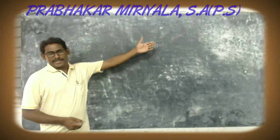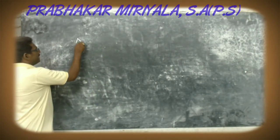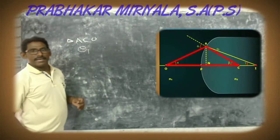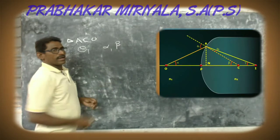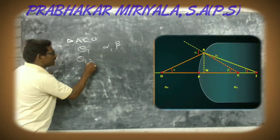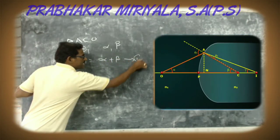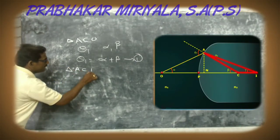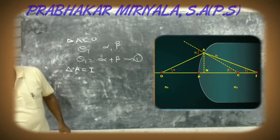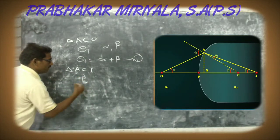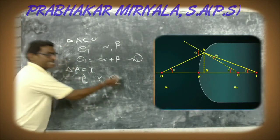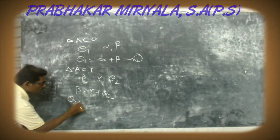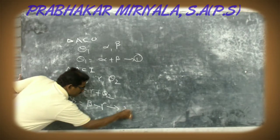From the diagram, in triangle ACO, theta 1 is the exterior angle and alpha and beta are the interior angles. So theta 1 is equal to alpha plus beta. This is equation 1. In the same way, in triangle ACI, beta is the exterior angle and gamma and theta 2 are the interior angles. So theta 2 is equal to beta minus gamma. This is equation 2.